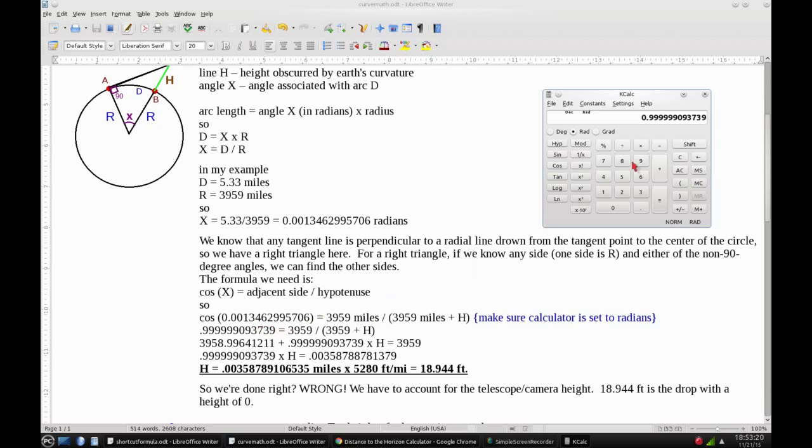So that number equals 3,959 divided by 3,959 plus H. I'm going to multiply this term to this side, and I get this number right here, plus 0.9999993739 times H equals 3,959. So I'll subtract this number from the 3,959, and I get this number.